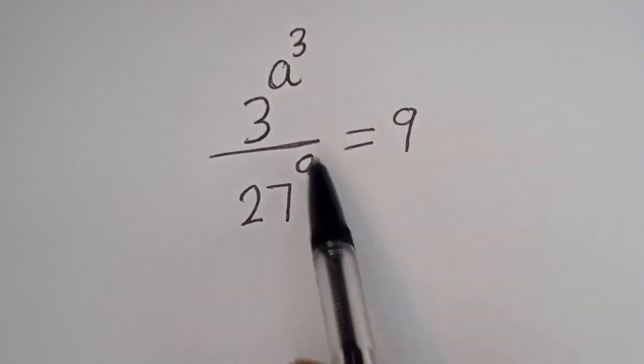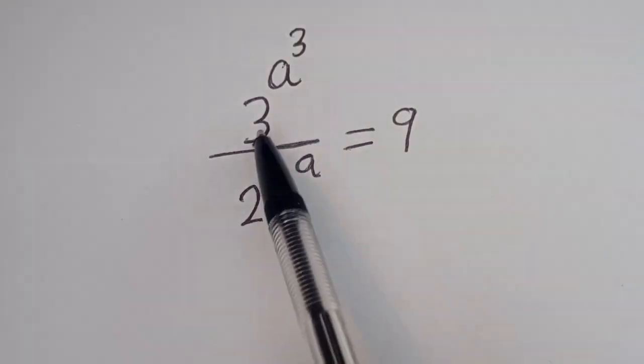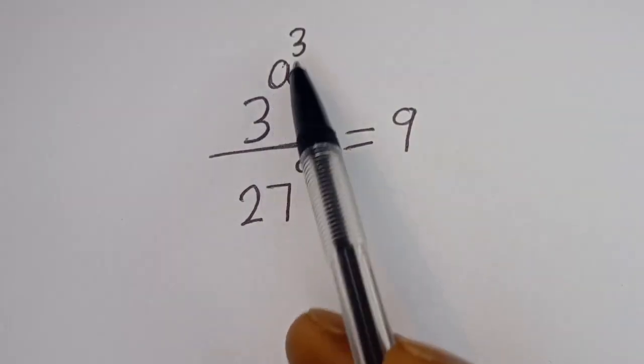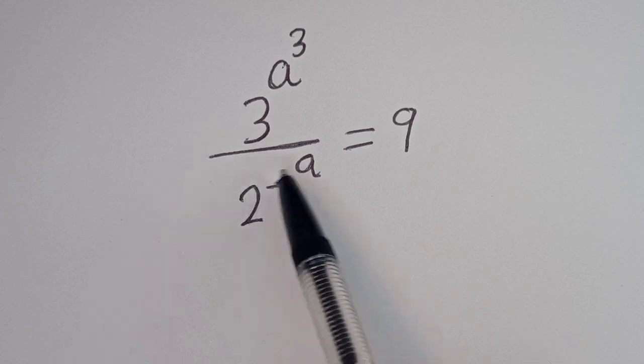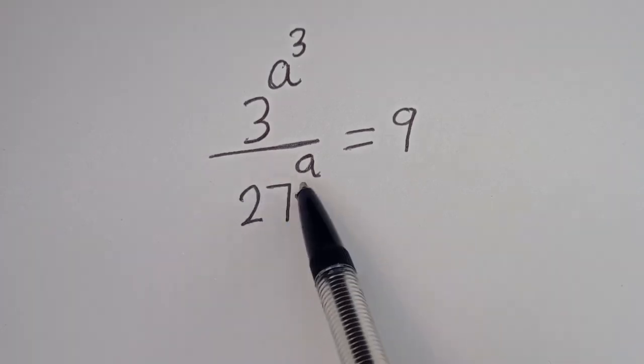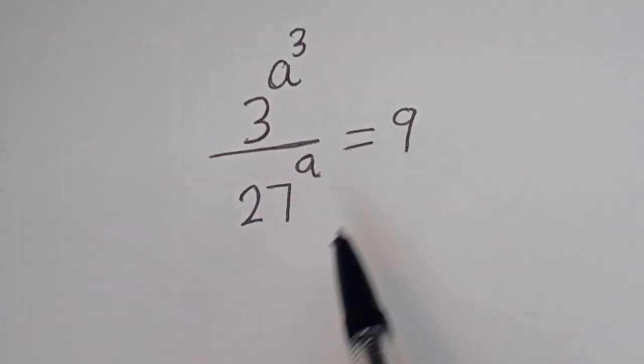Hello. How to solve for A in this equation: 3 to the power of A to the power of 3, divided by 27 to the power of A, is equal to 9.